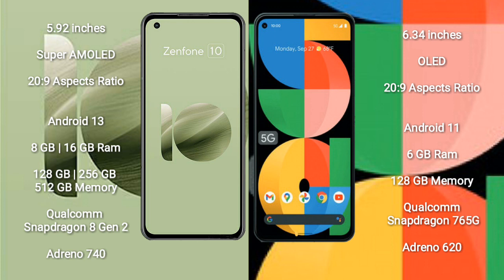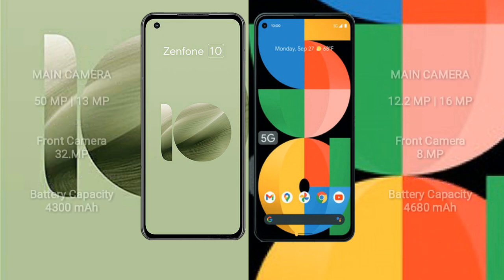Google Pixel 5a comes with 6GB RAM and 128GB internal storage. It features a Qualcomm Snapdragon 765G processor and GPU Adreno 620.